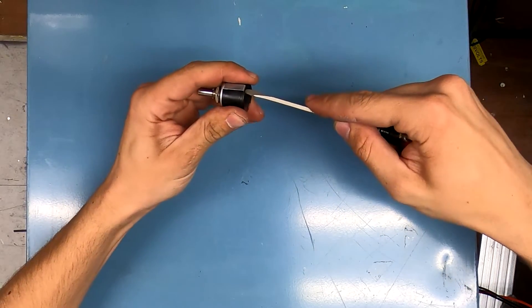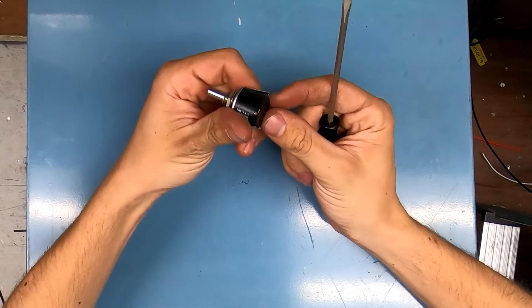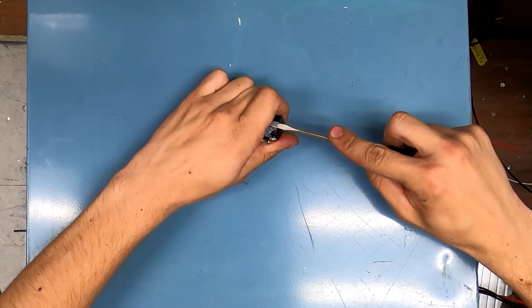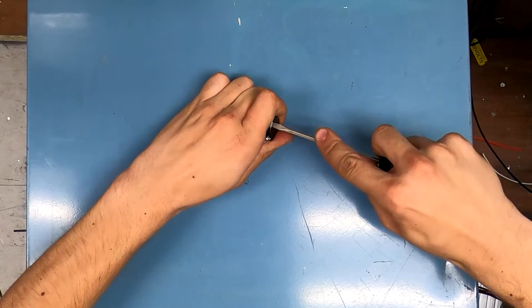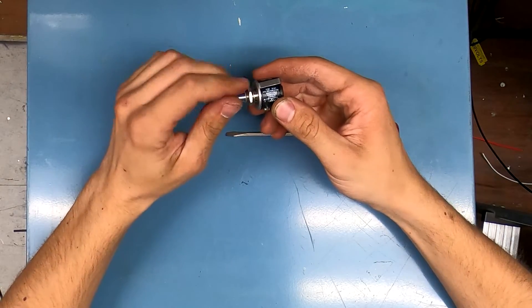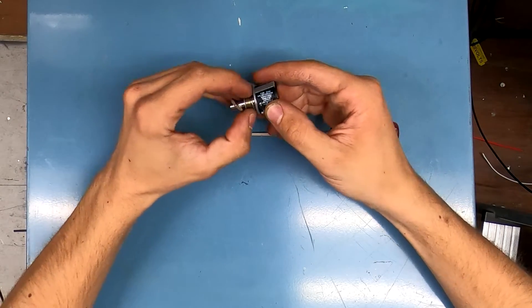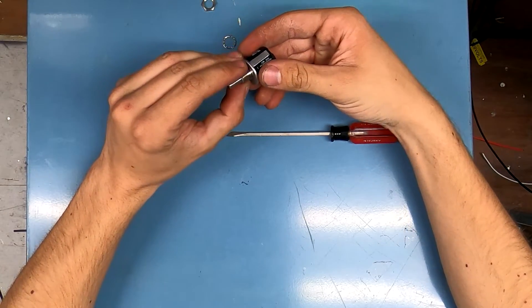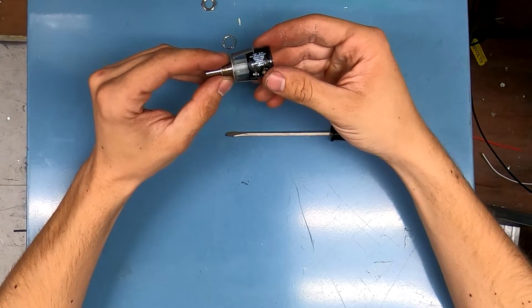I put the screwdriver in there and twisted, and it went ahead and unclipped that slightly. I'll do the same on the other side and pry that clip off. We'll remove the lock nut. You can see it's starting to separate.